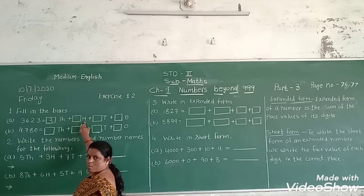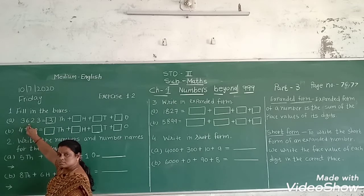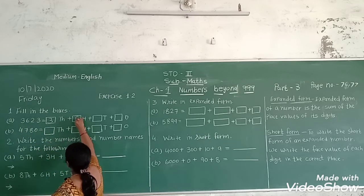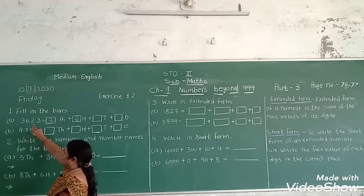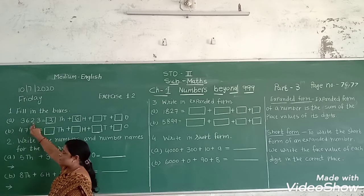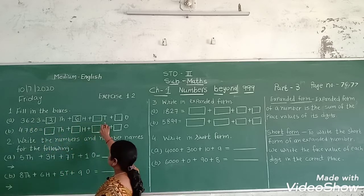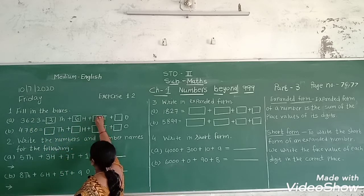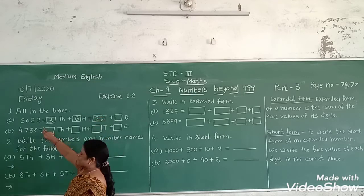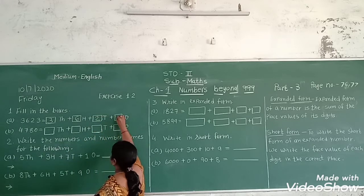Hundred box — the hundred place number is six, so we write six. Next, the tens place — the number is two, so we write two in the tens box. And three is in the ones place, so we write three in the ones box.